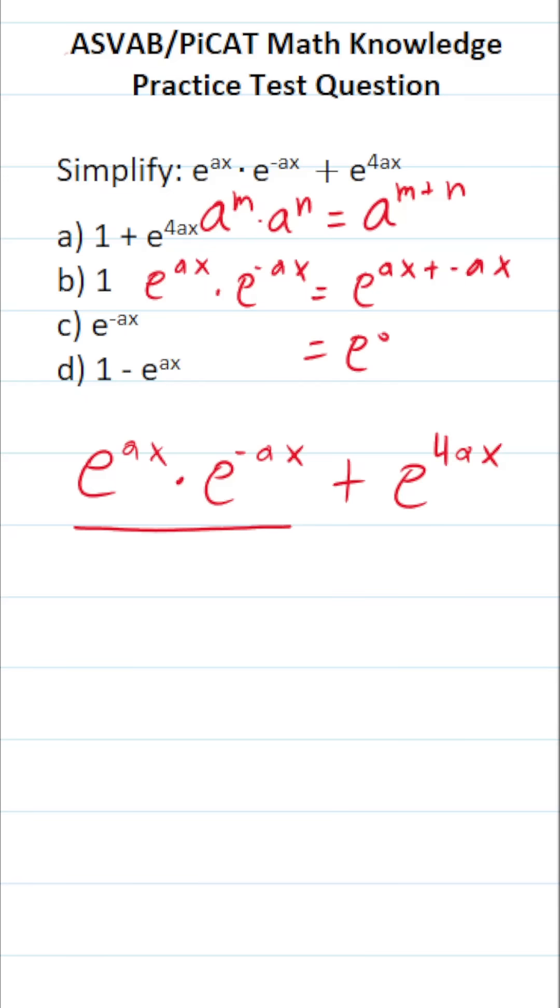The only other law of exponents that you need to know is anything raised to the zero power is simply one. For example, five to the zero power is one, x to the zero power is one, and so on. That means e to the zero power is simply one.